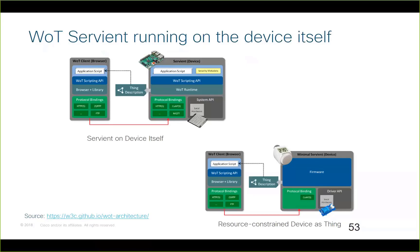We can have a Servient running on the device itself. For a non-constrained device — for example, a LED on a Raspberry Pi with a powerful CPU and memory — the device acts as a web server and can be directly connected to the internet. The client browser consumes the thing. For a constrained device, it uses the CoAP protocol binding because it is not powerful enough to support HTTP, but CoAP is similar to HTTP for constrained devices. This minimal Servient device exposes the thing description which is then consumed by the browser.